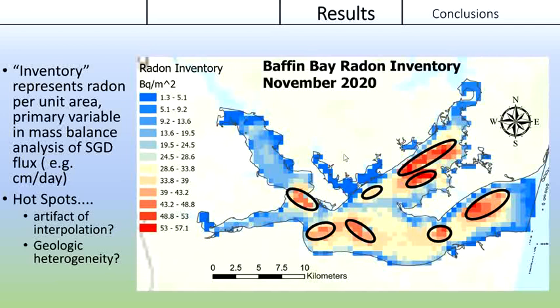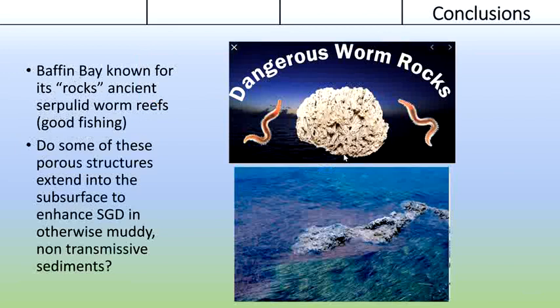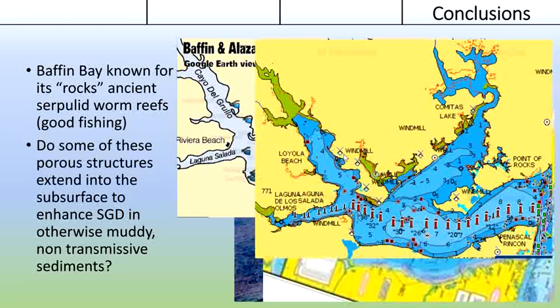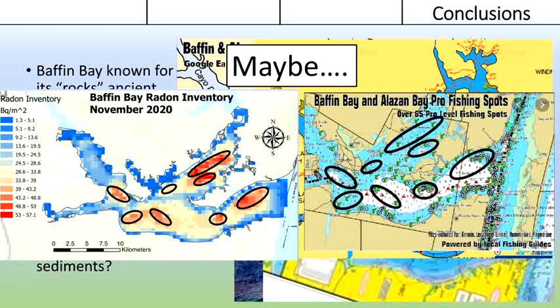There's also another theory in our lab group that takes a different approach — more geologic and biologic. Baffin Bay is a unique host to Serpolid reefs, also known as the Baffin rocks. Some of these reefs were active well before the last ice age and are made up of masses of silica-cemented worm tubes. While most of the bay has a muddy, silty clay bottom that resists water flow, these reefs might act as a porous substrate that penetrates deep enough to enhance groundwater movement upwards. The Baffin rocks are locally famous for the fish caught in them and the propellers they've destroyed — but could they also be a major vector for groundwater and nutrients? At a quick glance, there seems to be a correlation, but more work will definitely need to be done.